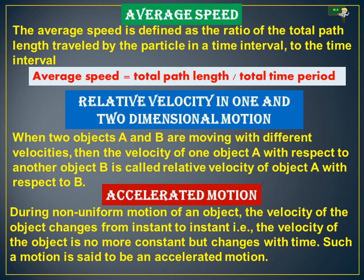Now, accelerated motion. During non-uniform motion of an object — that means the object is not in stable motion — the velocity of the object changes from instant to instant. That is, the velocity is no longer constant but changes with time. Such motion is said to be accelerated motion.